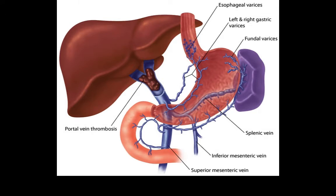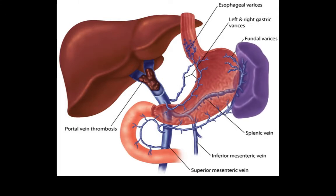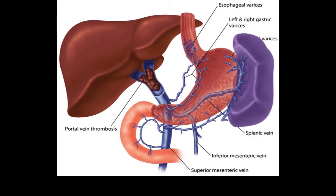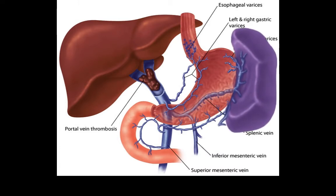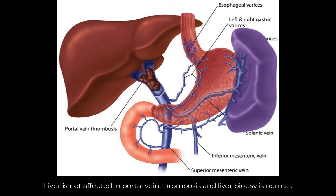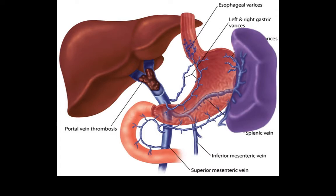The patient can present with bleeding esophageal varices and hematemesis, and vague abdominal pain. Physical examination can show an enlarged spleen, or splenomegaly. The liver itself is not affected — if we get a liver biopsy, we will find normal hepatic tissue.